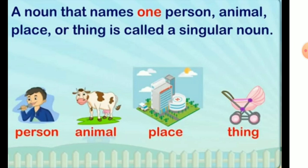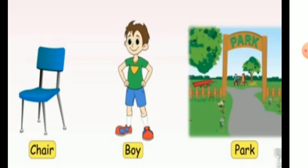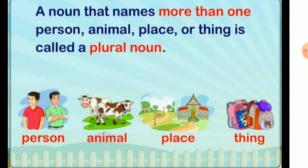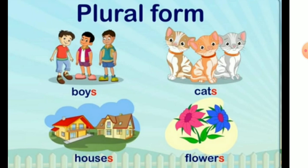For example: chair, boy, park. Whereas, a noun that names more than one person, animal, place, or thing is called a plural noun. For example: boys, cats, houses, flowers.